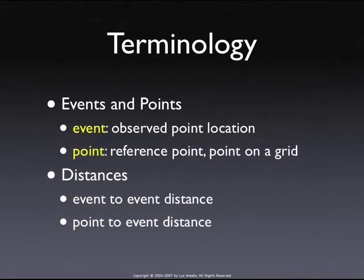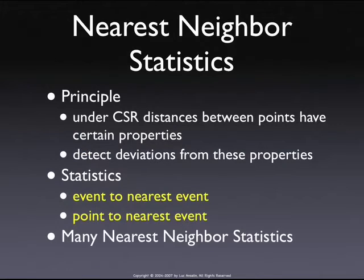Typically these are nearest neighbor distances — the distance between an event and its nearest neighbor. Or we take a reference grid and compute the distance from any point on the grid to the nearest event, the nearest homicide location for example. There are literally hundreds of these kinds of statistics. In the early literature there was a lot of interest in the mathematical properties of things like the largest, smallest, or average nearest neighbor distance and their relationship to complete spatial randomness.